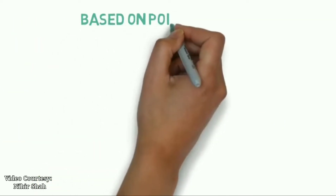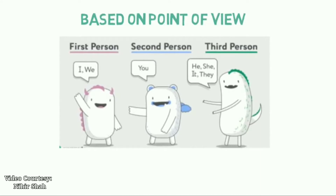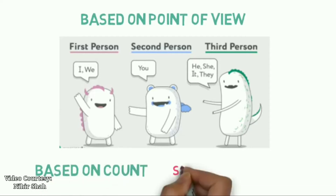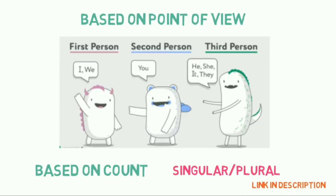Now, based on point of view, a subject may be in first person, second person, or third person. In first person, we have 'I' and 'we.' In second person, we have 'you.' And in third person, we have 'he,' 'she,' 'it,' and 'they.' And based on count, a subject may be singular or plural. These topics have been discussed in detail in our Parts of Speech video series. I will provide the link in the description in case you need it. Please go through those videos for revision.